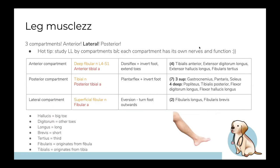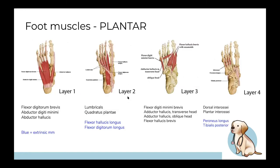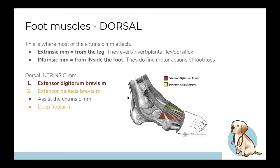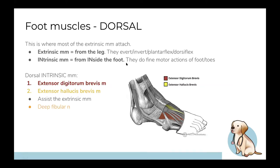Moving down to the foot, we have dorsal muscles and plantar muscles. There are extrinsic muscles — starting outside the foot and attaching inside — and intrinsic muscles, which are smaller and start within the foot. Intrinsic muscles do fine motor actions and move the toes, while extrinsic muscles are bigger and perform dorsiflexion, eversion, and so on.